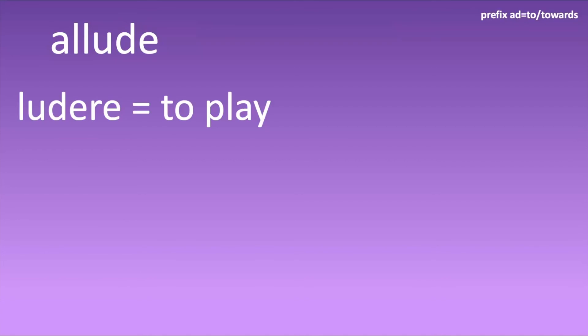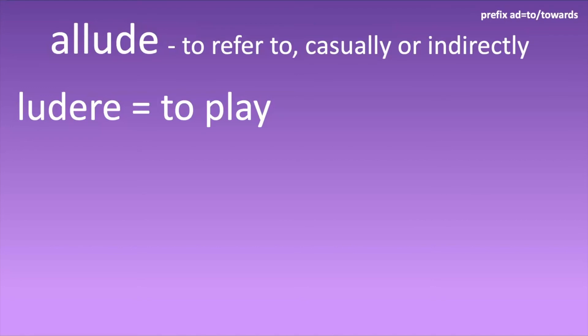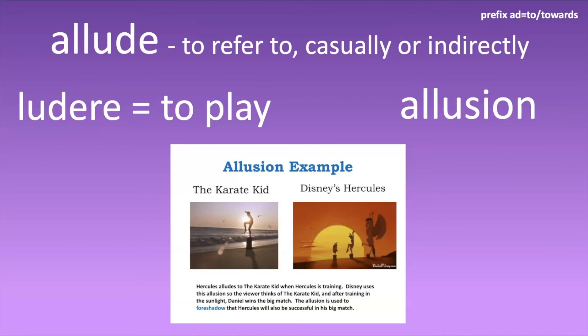Our next word is 'allude.' This actually comes from 'ludere,' meaning to play, because this word means to make reference to something but not directly — you're kind of playing around with the wording or the reference, referring to it casually or indirectly. A lot of times you'll see this as a noun: 'allusion.' Here's an example: there's a famous image from Karate Kid with the crane kick, and Disney used that imagery. It doesn't say 'here's the Karate Kid' — it just uses the imagery, alluding to the idea that Hercules is going to be as successful as the Karate Kid was in his training and battles.